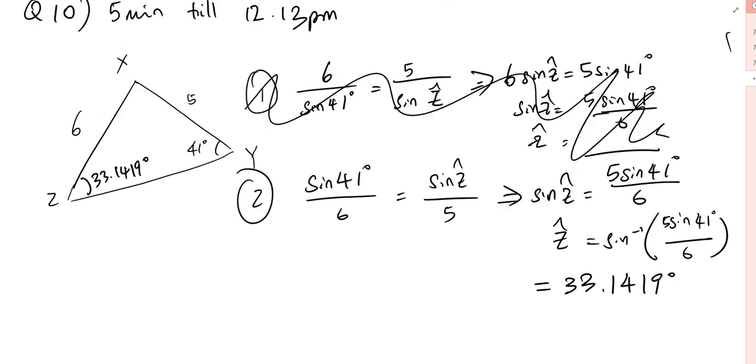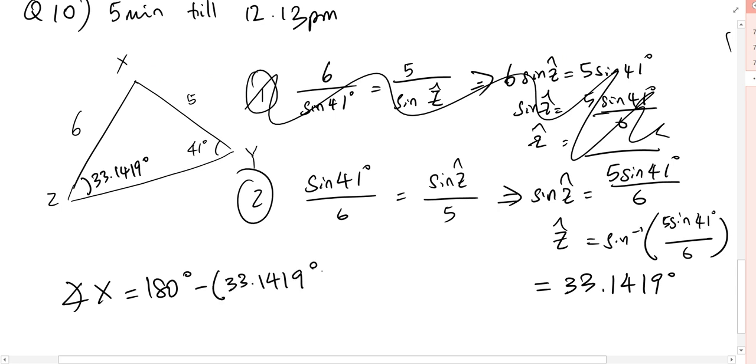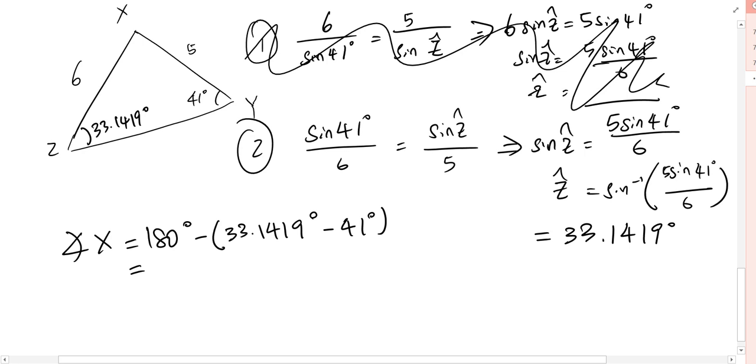I can find angle X right now, so angle X equals to 180 degrees minus 33.1419 minus 41 degrees. And what do we have? Oh yeah, sorry. Thanks. Okay, so what do we have when we subtract? I do have a calculator.